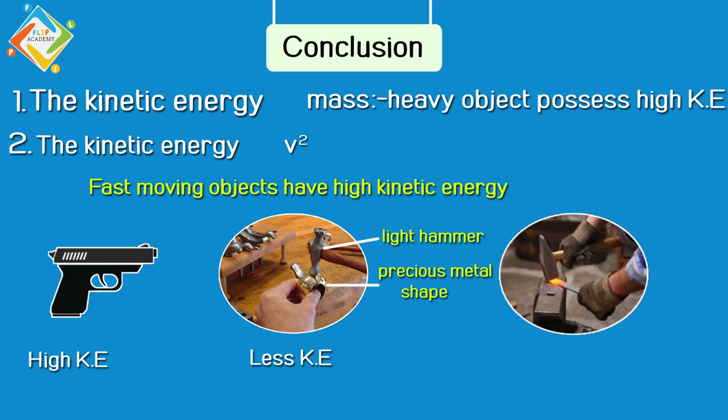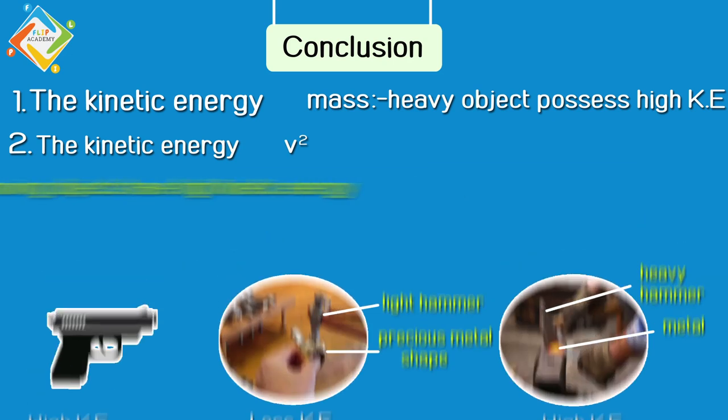Similarly, if we talk about a blacksmith, the blacksmith uses the hammer to mold the metals. In that condition, the hammer is quite heavy. He cannot work with a light hammer because he needs more kinetic energy so that he can mold the metal easily. For that, he uses a heavy hammer.